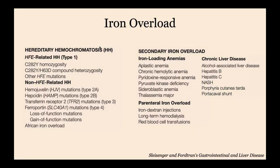When we talk about iron overload, we generally mean hemochromatosis in the liver context. Iron overload can be either primary — from a hereditary or primary cause — or secondary. Secondary iron overload can be iatrogenic, such as when patients receive many blood transfusions in the setting of thalassemia or chronic aplastic anemias, or if they're getting IV iron supplements for a prolonged period. Hereditary causes include hemochromatosis of many types, the most common being the homozygous C282Y mutation.